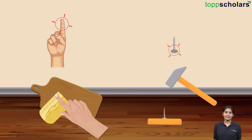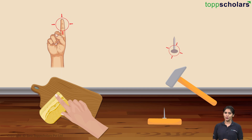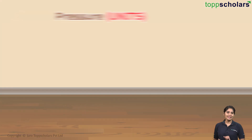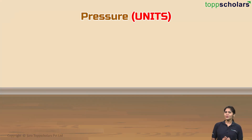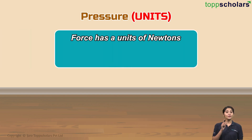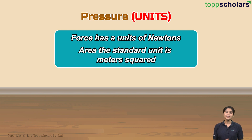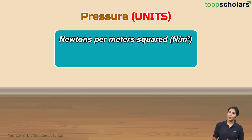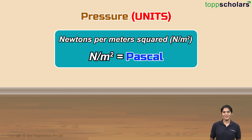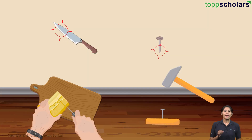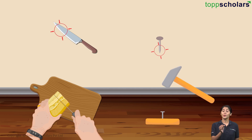In those cases, the pressure was very small, and that's why it was not able to cut or puncture through. Now let's quickly look at the units. What would be the unit of pressure? Well, force has units of Newton and the standard unit of area is meter squared, so pressure is calculated in Newtons per meter squared. Newton per meter squared is also often called Pascal. This tells us how many Newtons of force are acting for every meter squared of area.